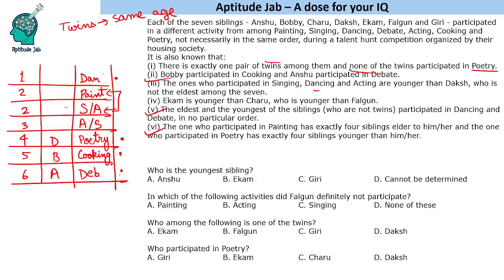Now we fill the remaining four people. Akam is younger than Charu. We have three positions left — since positions four and five are equal (the twins), Akam must be the youngest among the remaining group. Charu and Giri are equal in age — they are the twins — and Fagun fills the remaining position. That completes the table.